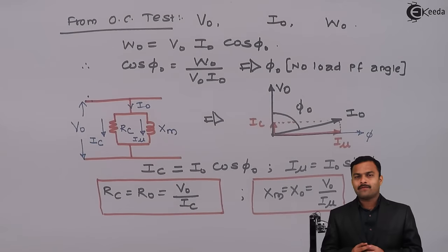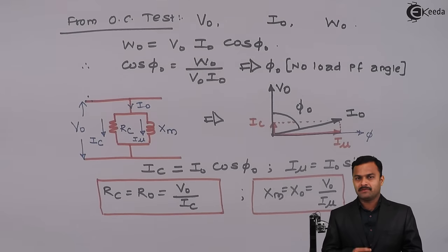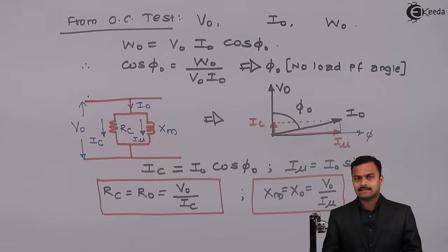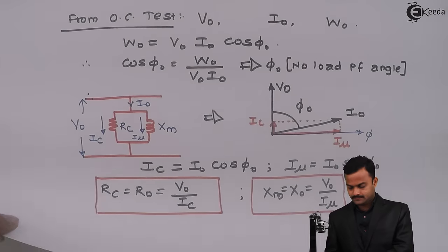The outcome of the OC test is obtaining the two parameters RC and XM. Whatever power is measured by the wattmeter is nothing but the core losses in the transformer. Let's go to the second test, which is the short circuit test.